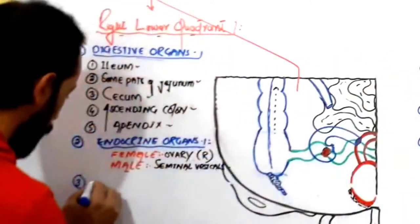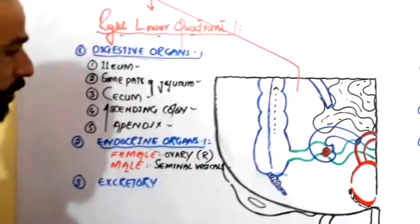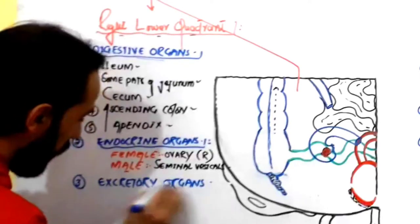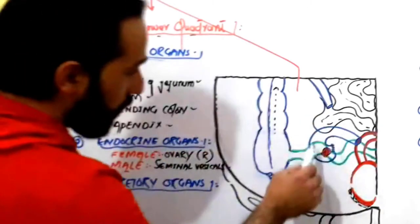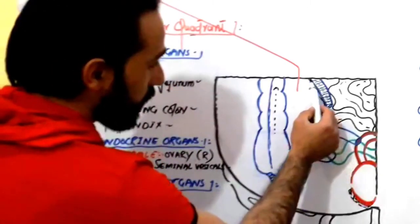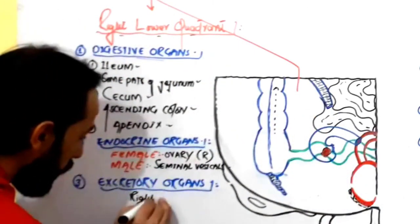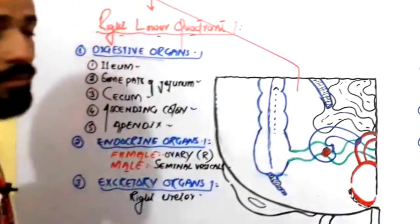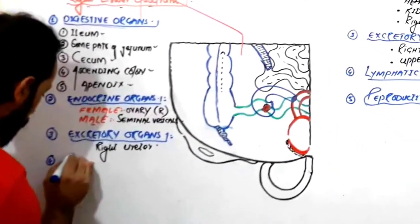The third group of organs: are there any excretory organs in the right lower quadrant? Yes, there are. As you can see, the distal part of your ureters is found here. The right ureter is found in the right lower quadrant of the abdominal cavity.